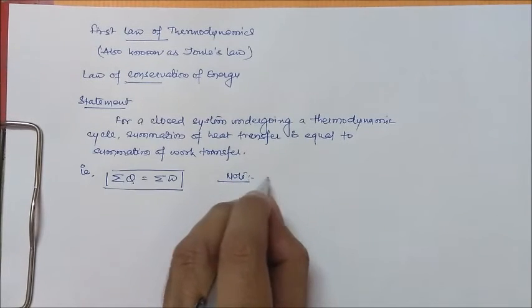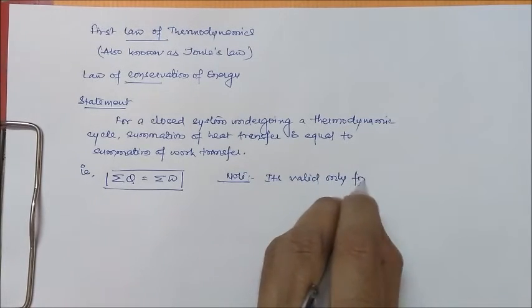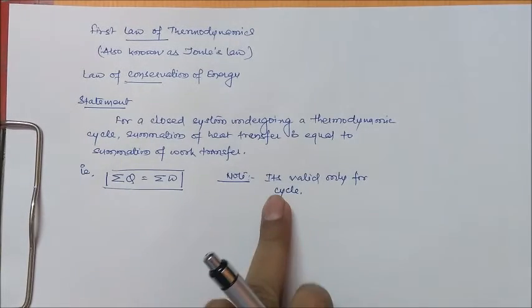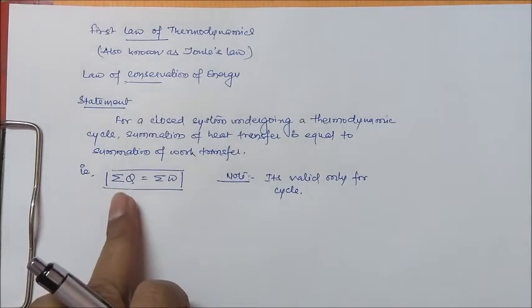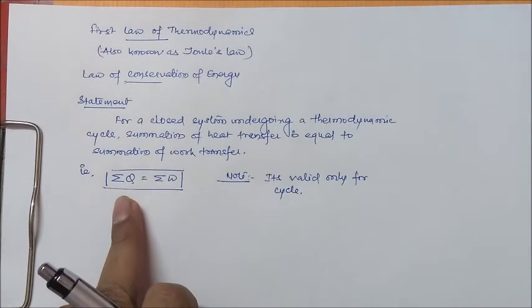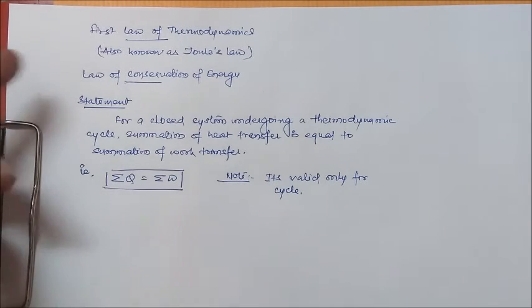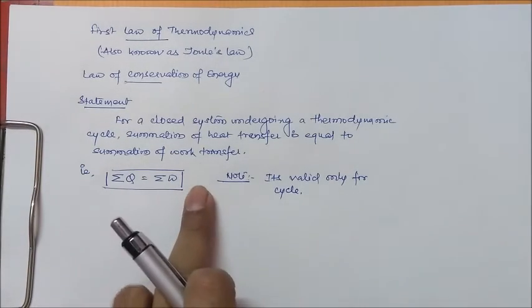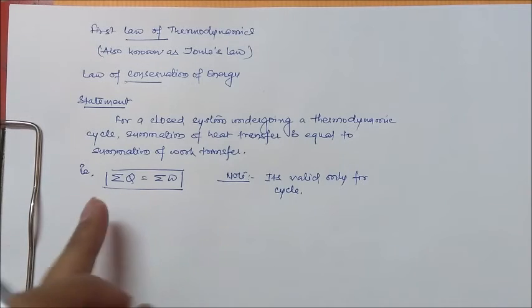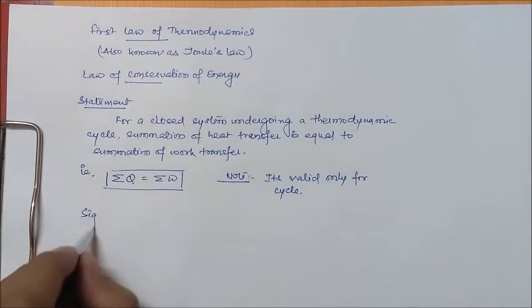Note here that the first law is valid only for a cycle — it is not valid for a process. From the formula ΣQ = ΣW, we can see that the whole heat is transferred to work, which validates the law of conservation of energy: energy is neither created nor destroyed, it is transferred from one form to another, since heat and work are two different forms of energy.